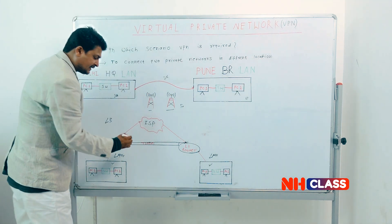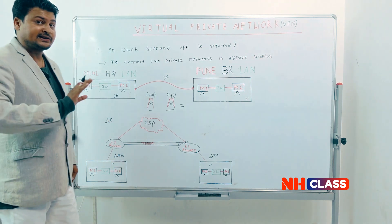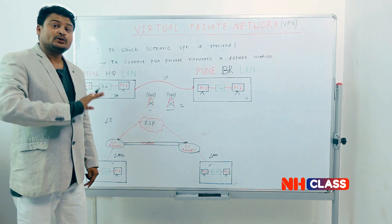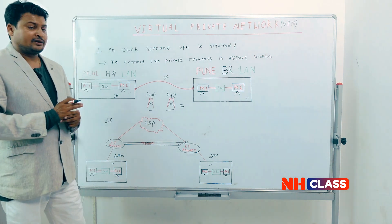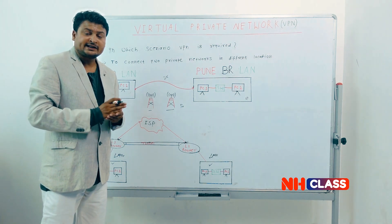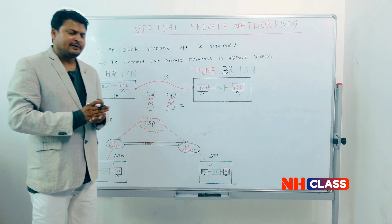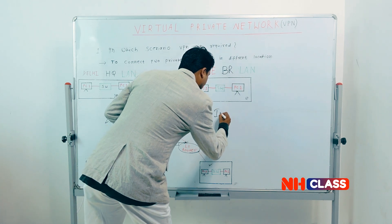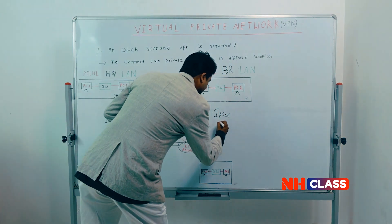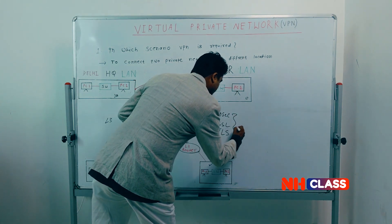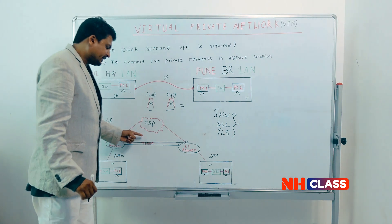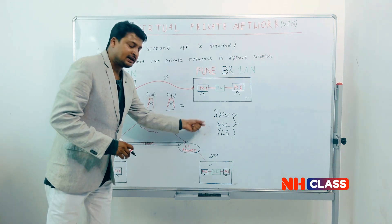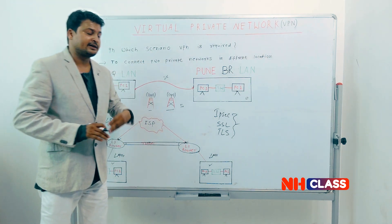Just having a tunnel between two sites does not mean your data is secure. We implement different types of protocols on top of the tunnel to secure our connectivity. We need to apply CIA — confidentiality, integrity, and authenticity. For that, we need protocols like IPsec, SSL, or TLS. These protocols are implemented on the tunnel to secure your data. Understanding IPsec, SSL, and TLS will be covered in a different video.